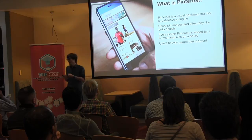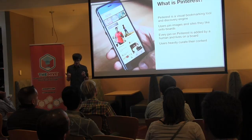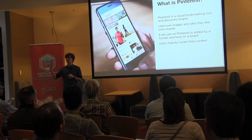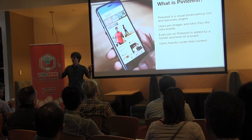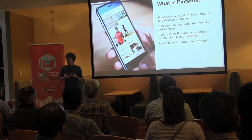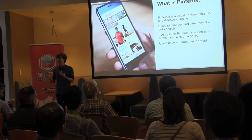On Pinterest there are two types of objects. There are pins that belong to collections. Collections are called boards. Users go all over the web to collect these pins and organize them into boards. And once an object is inside Pinterest as a pin, other users can discover it and an interesting kind of evolution of that content starts to happen.